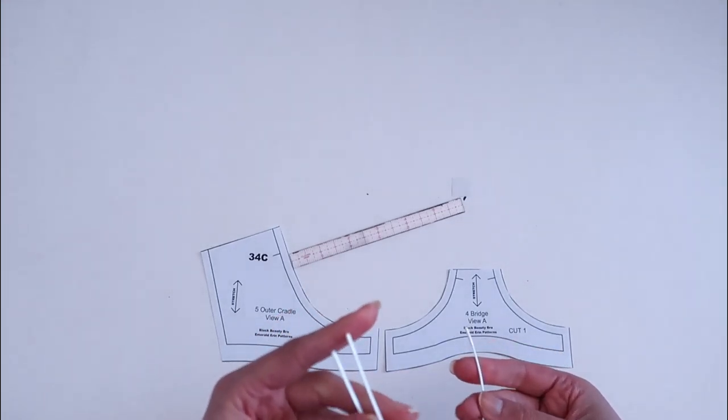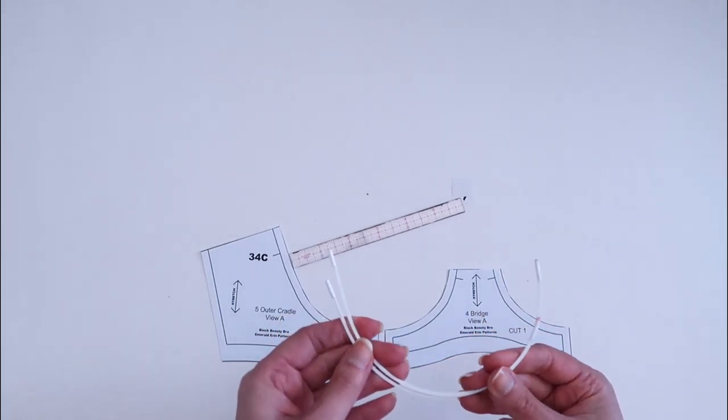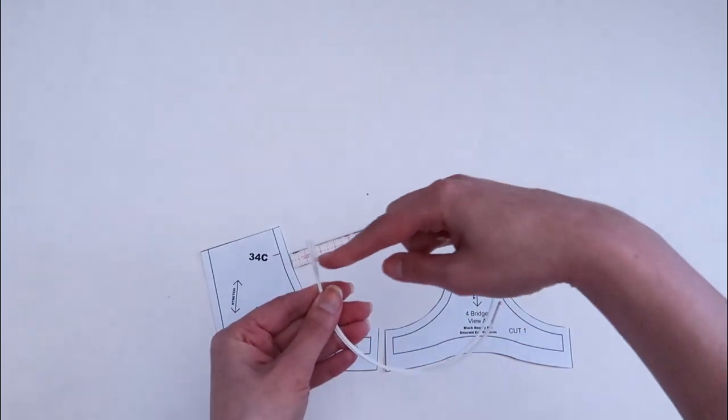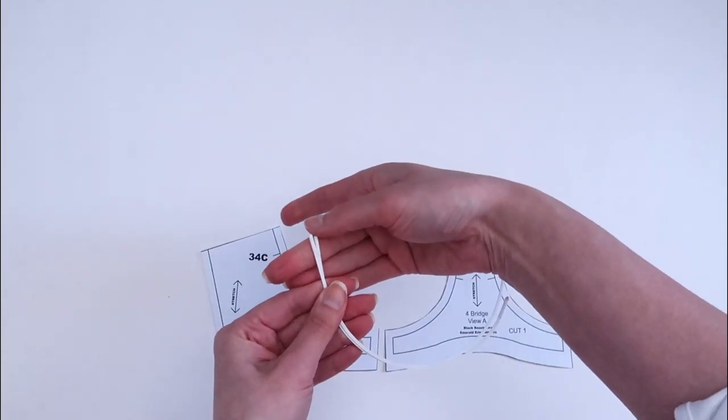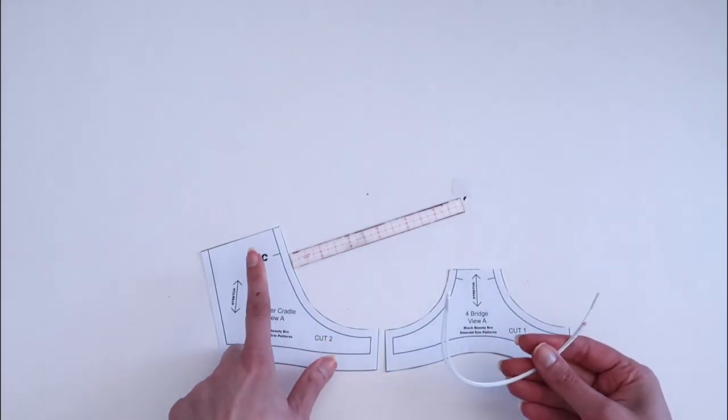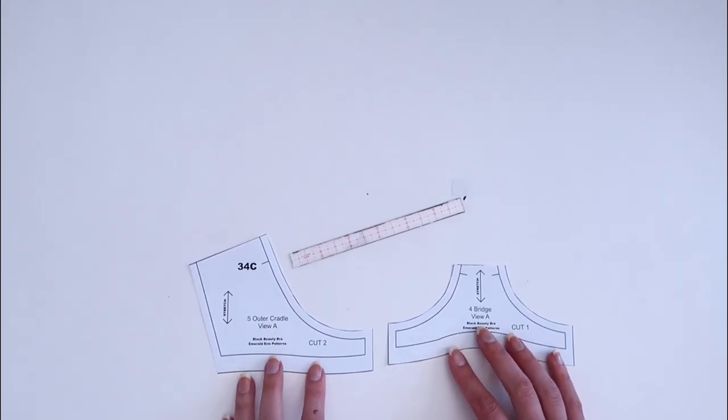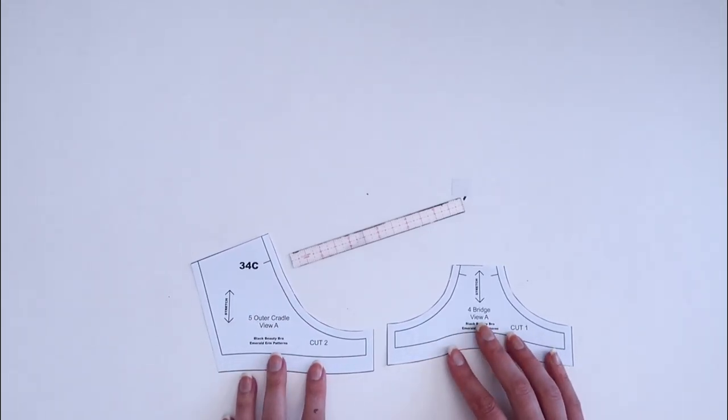Because when I lined up my plunge and my day style wire they had the same height on the underarm edge, so the wires themselves end at the same height over here. I don't need to make any adjustments on the underarm edge of my pattern. So this is the only adjustment that I need to make to my pattern pieces here.